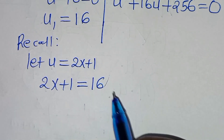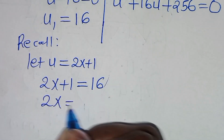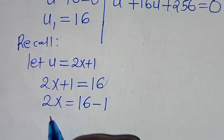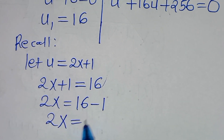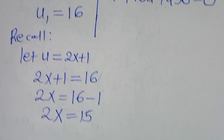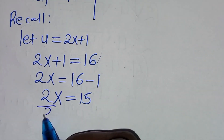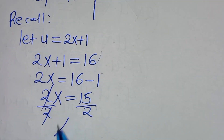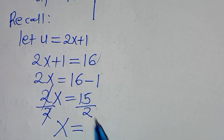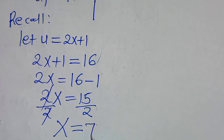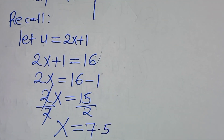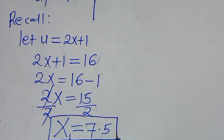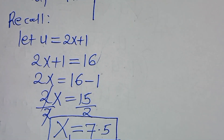So let's take 1 on the right-hand side. We have 2x equal to 16 minus 1, and this implies that 2x equals 15. So let's divide both sides by 2, so that x equals 15 divided by 2, which is 7.5. So this is the first value of x, x1.